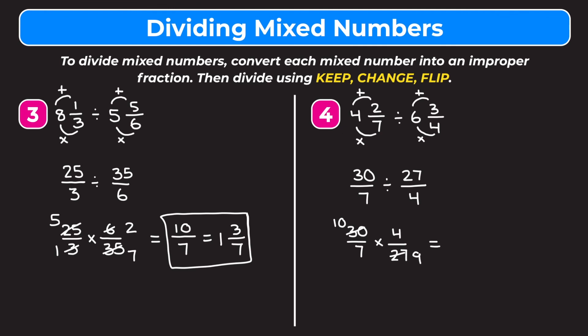Multiplying straight across: ten times four gives us forty as our numerator, and seven times nine gives us sixty-three as our denominator. We can't simplify that, so we get forty over sixty-three as our answer.